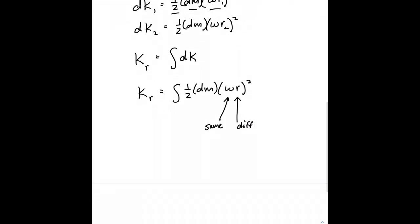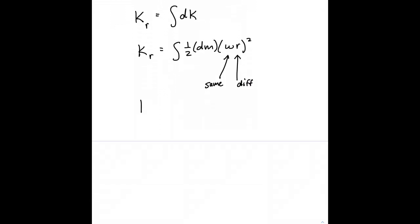So we'll pull out of the integral any values that are constant, and the rotational kinetic energy then of our flywheel is one-half times omega squared. This means both the omega and the r get squared. So one-half omega squared times the integral of r squared dm.